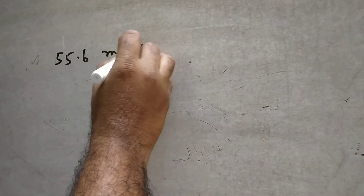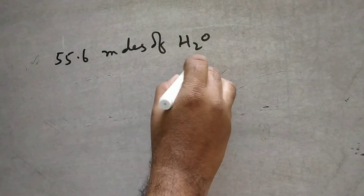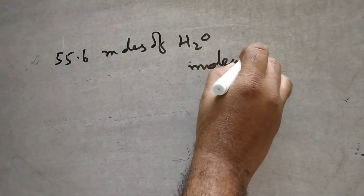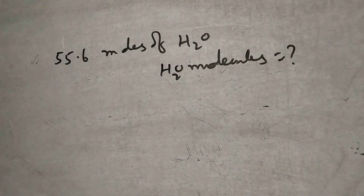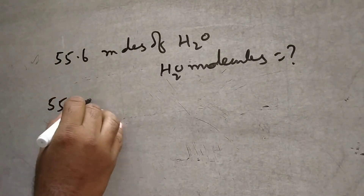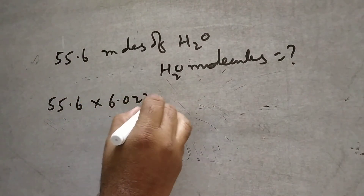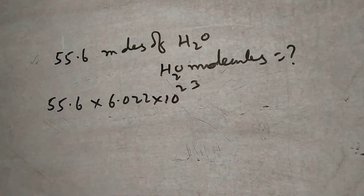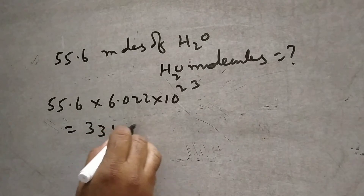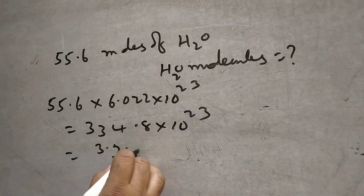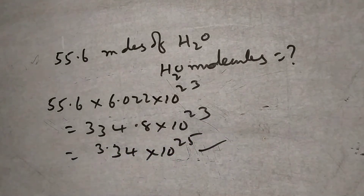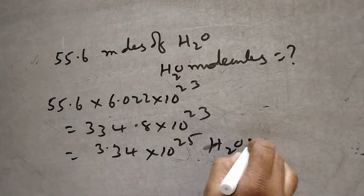Next problem: 55.6 moles of water molecules are present — how many molecules are present? It is very simple: 55.6 into 6.022 into 10 to the power of 23, that is 334.8 into 10 to the power of 23, or 3.34 into 10 to the power of 25 H₂O molecules.